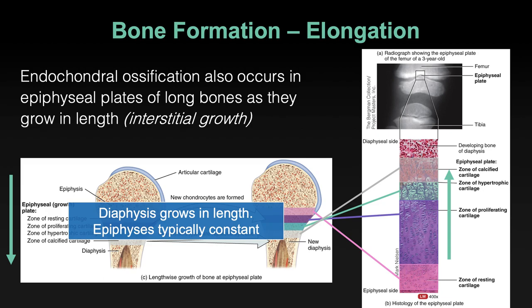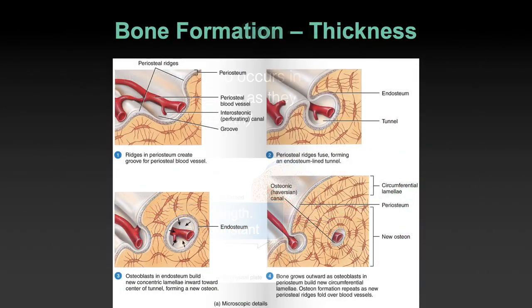This is only growth in length. At the same time, we need to grow in diameter. Imagine only growing in length — really long, thin bones wouldn't do well for track and field, basketball, or any type of sport. So growing in circumference is also quite important.